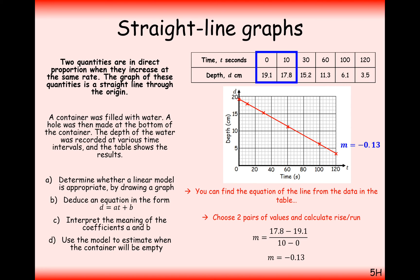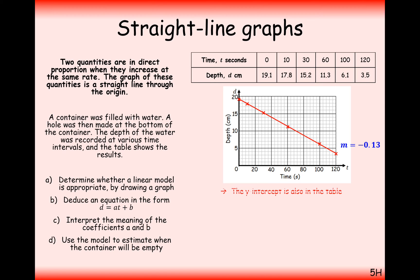That's the gradient part of this question. And we also know the plus c part is just the y-intercept. So, that's when it crosses this y-axis here, or the d-axis in this case. And that's going to be 19.1, because when the time is 0, 19.1 is the depth. So, we know that c is 19.1.